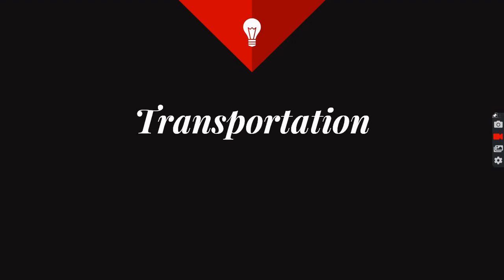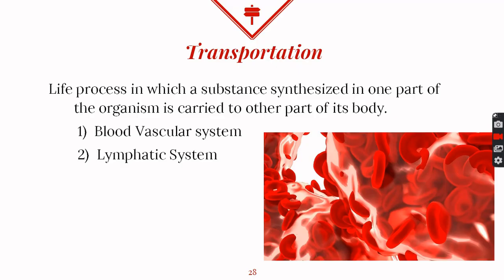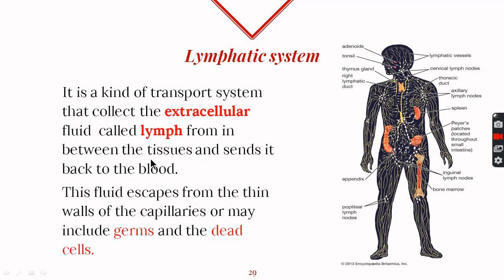Life process transportation can be divided into two types: blood vascular system, which we have already discussed, and lymphatic system. In this video we are going to discuss the lymphatic system. Just like the blood vascular system, the lymphatic system also consists of a fluid which is flowing in a network of tube-like structures.